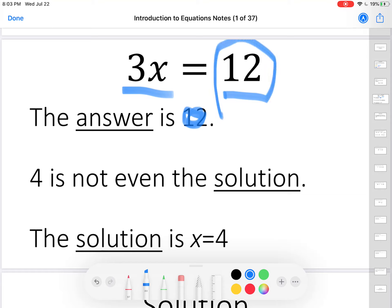And even 4? 4 is not even the solution. The solution is x equals 4. A solution has to be more than just a value. You have to say what is the variable that that value equals. That's how you state a solution. So, do you understand the difference between an answer and a solution? They are different things. The answer to this is 12. But the solution x equals 4 is a solution, because 3 times 4 is 12.